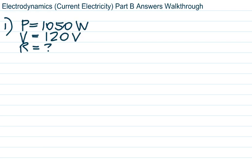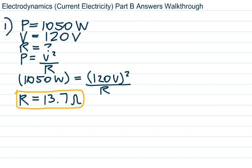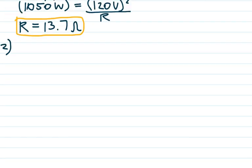I follow my physics problem-solving process: write down the givens — power and voltage — and identify that I want resistance. I look on page four of the reference table for the formula relating power, voltage, and resistance. I see that P equals V squared over R, substitute my numbers with their units, making sure not to forget to square the voltage, then cross-multiply and solve for the resistance, getting 13.7 ohms.